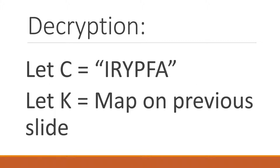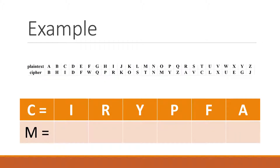Let's do an example. Let our ciphertext c be "birypfa". Let the key k be the map that's on the previous slide. So if we carry this out, we see that instances of i in the ciphertext should map to c in the plaintext, and instances of r in the ciphertext should map to i in the plaintext.